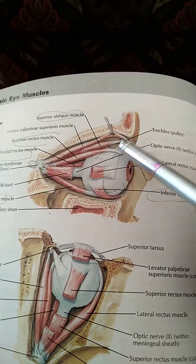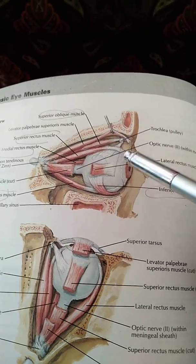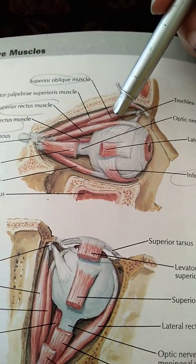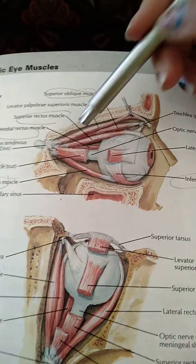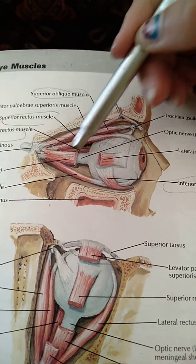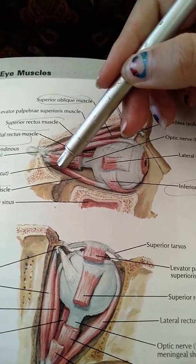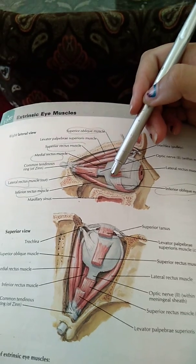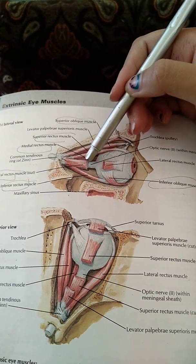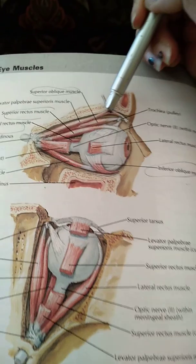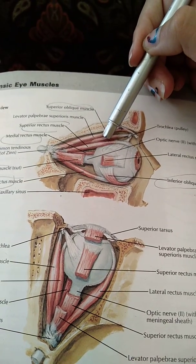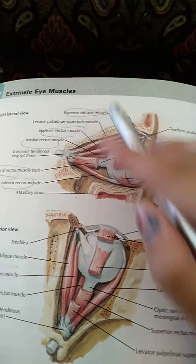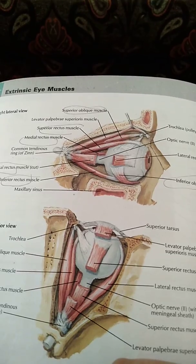The extrinsic muscles are of the following types: number one, the superior rectus muscle; the inferior rectus muscle; the lateral rectus muscle; the medial rectus muscle; the superior oblique muscle; and the inferior oblique muscle. These all are your extrinsic muscles of the eye.